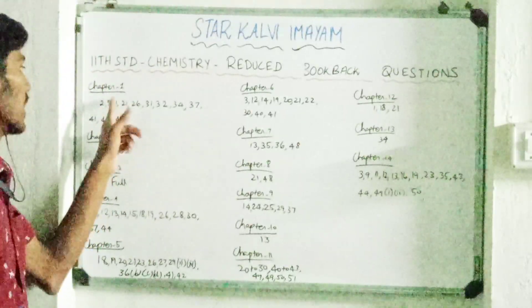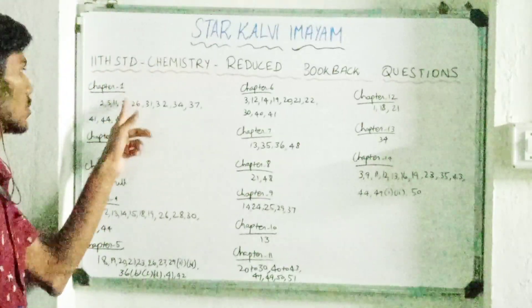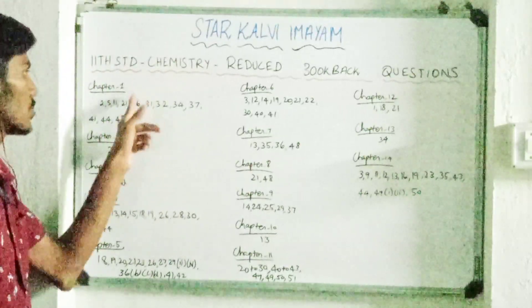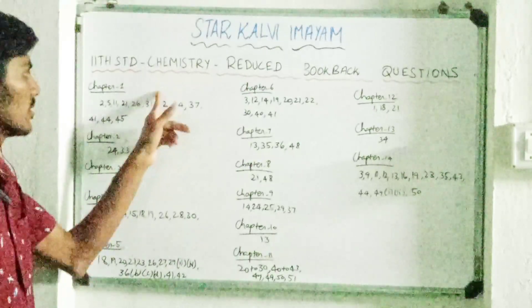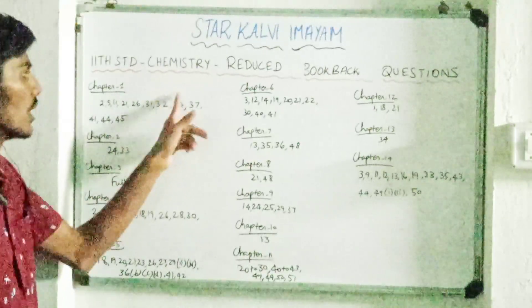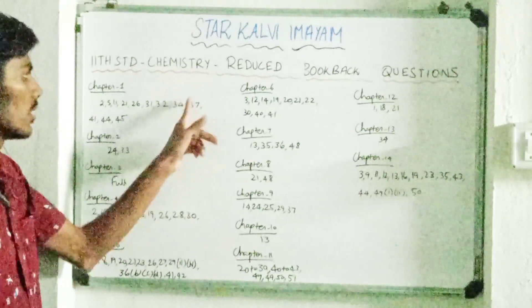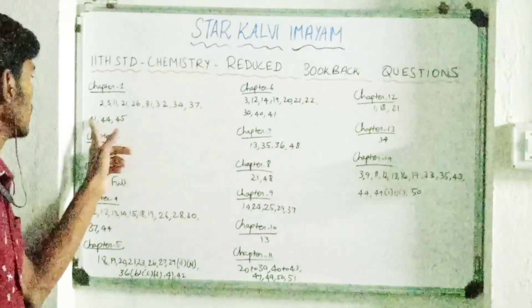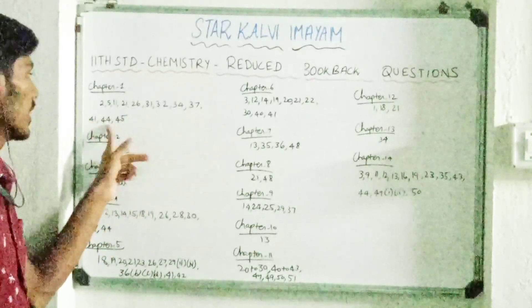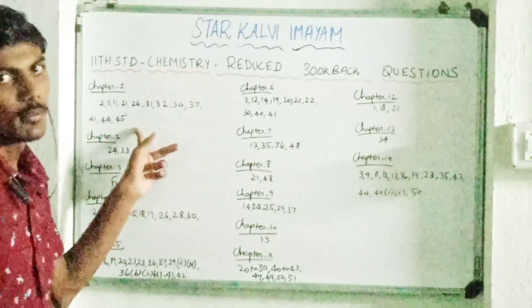Chapter 1 question numbers: 2, 5, 11, 21, 26, 31, 32, 34, 35, 37, 41, 44, 45.